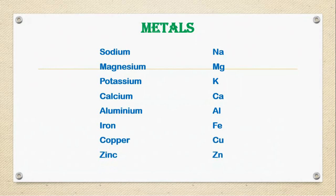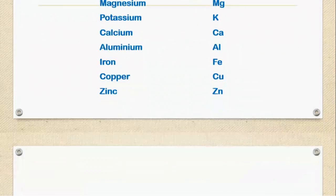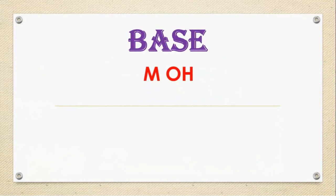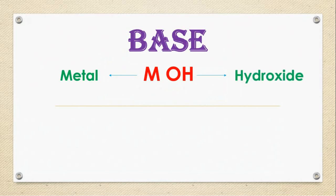If you want to learn about bases, why do we need to learn about metals? That is the question, isn't it? Let us see general formula for base. That is MOH. What is M? It is metal. What is OH? It is hydroxide.